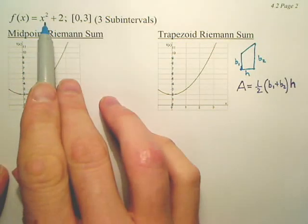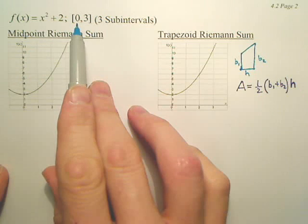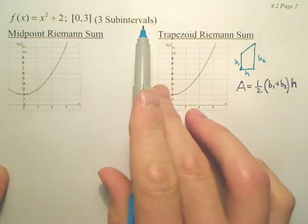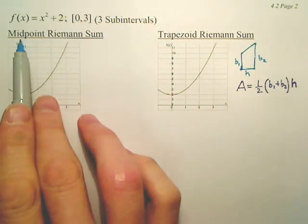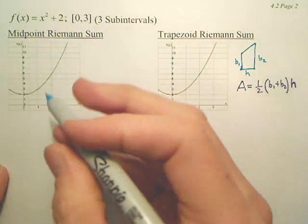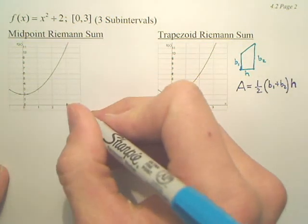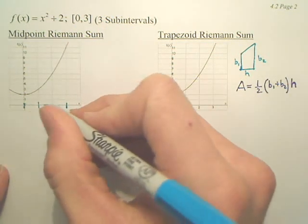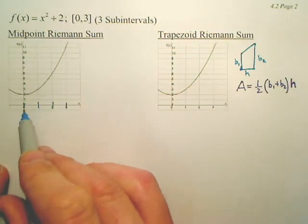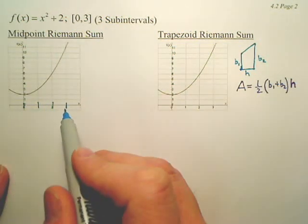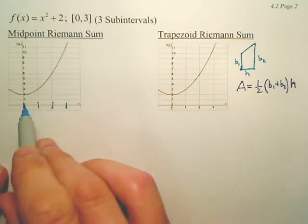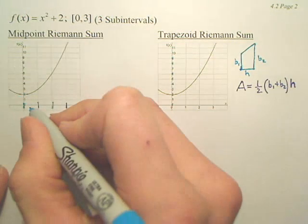I want to find the area. Here's the graph of x squared plus 2 on the interval 0 to 3. I want to make three subintervals, but I'm making my rectangles using midpoints. So if it's 0 to 3, here's my subintervals. They have a width of 1. But to make my rectangle, we don't use the left or the right. We use the midpoint.